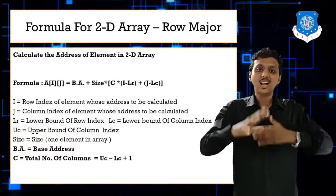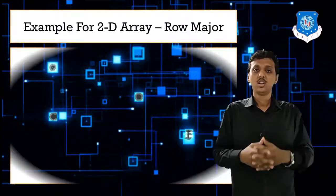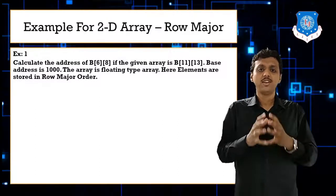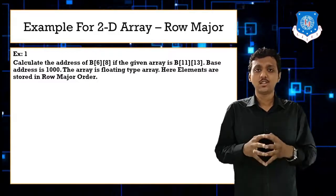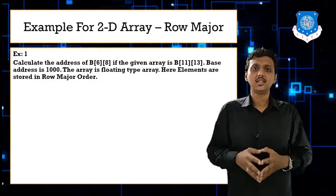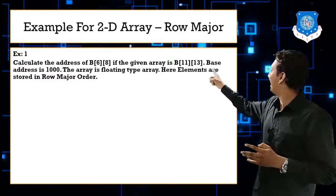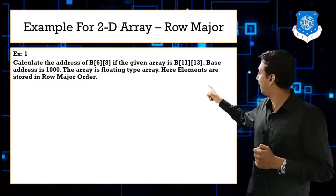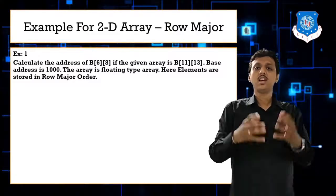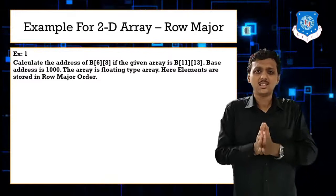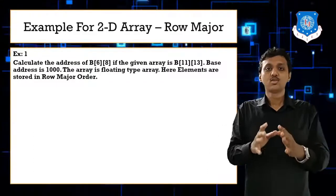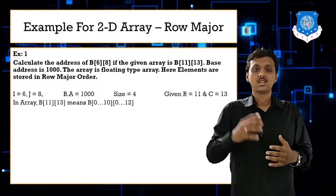Now let's move to the examples for row major. The first example: calculate the address of B[6][8], given the array is B[11][13], base address is 1000, and the array is of floating type.